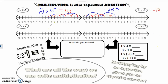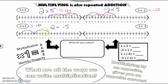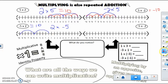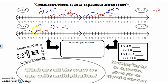Down here I have negative five times two, which is basically two groups of negative five. I still end up at negative ten. With the commutative property, this is the same as two times negative five — two jumps of negative five — which is also negative ten.